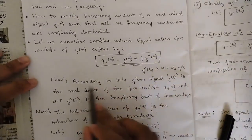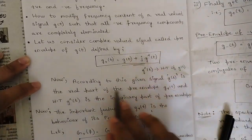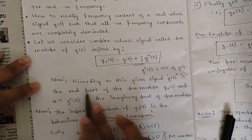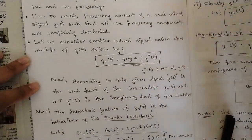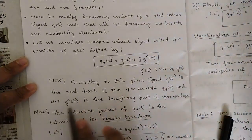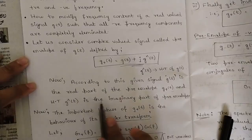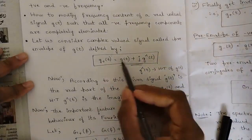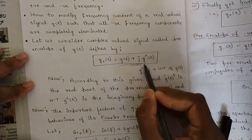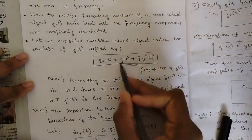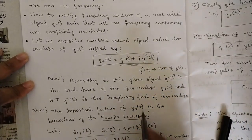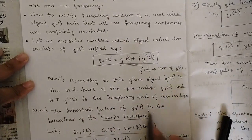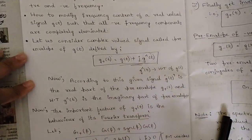According to the given signal G(t): G(t) is the real part of the pre-envelope G+(t), and Ĝ(t) — that is, the Hilbert transform — is the imaginary part of the pre-envelope. So G(t) is the real part and Ĝ(t) is the imaginary part. The important feature of this pre-envelope is the behavior of its Fourier transform.